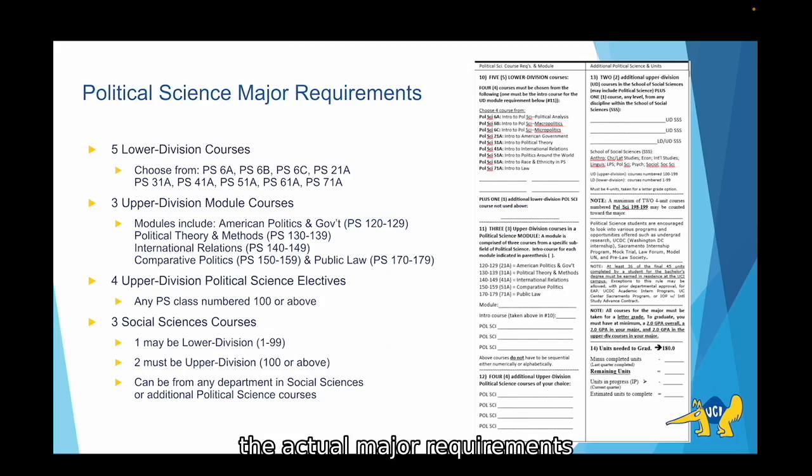Now we're going to talk about the actual major requirements for political science. To begin with, most majors at UCI are comprised of lower division courses and upper division courses. Lower division courses are numbered 1 through 99 and are designed to be introductory courses. Upper division courses are numbered 100 through 199 and are more specialized seminar based classes where you get into more specific topics.